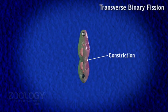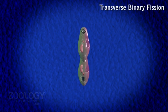In the meantime, a constriction furrow appears near the middle of the body. It deepens and ultimately the cytoplasm is completely divided into two daughter paramecia.